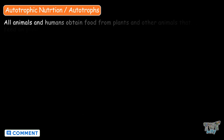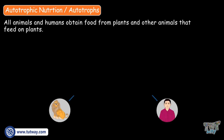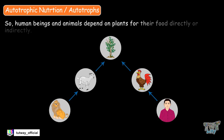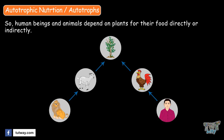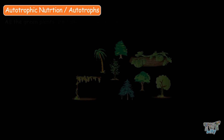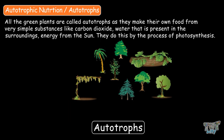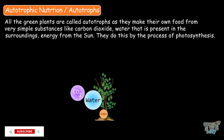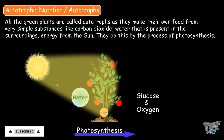All the animals and humans obtain food from plants and other animals that feed on plants. So human beings and animals depend on plants for their food, directly or indirectly. All the green plants are called autotrophs, as they make their own food from very simple substances like carbon dioxide and water that are present in the surroundings, using energy from the sun, and they do this by the process of photosynthesis.